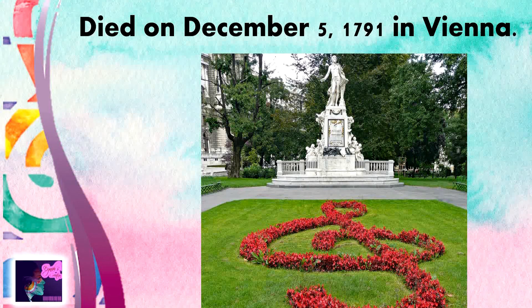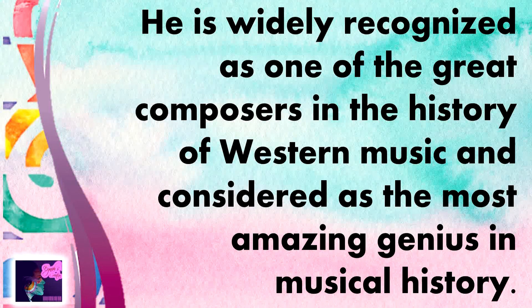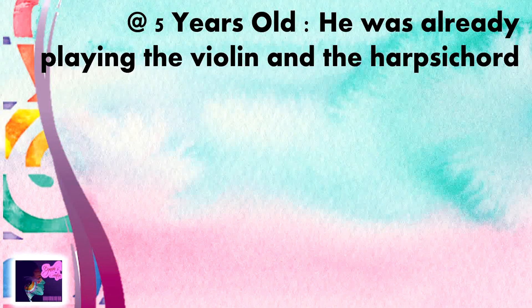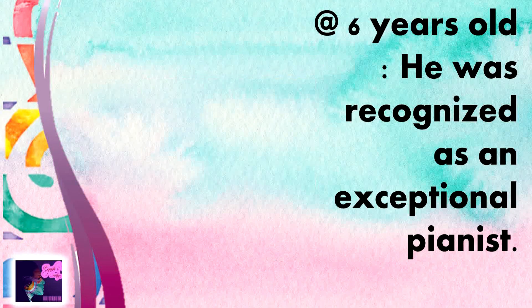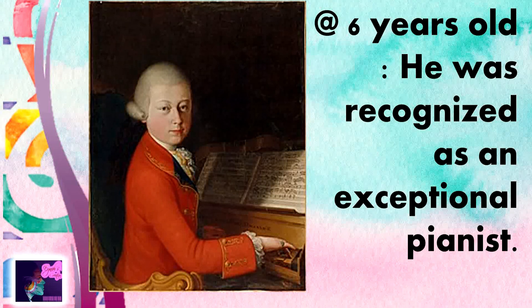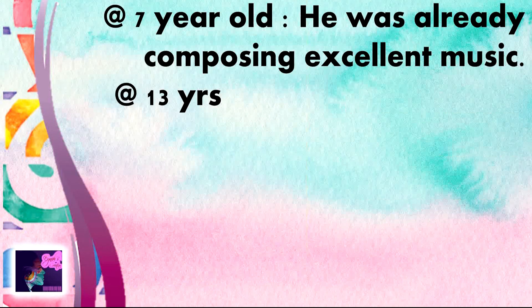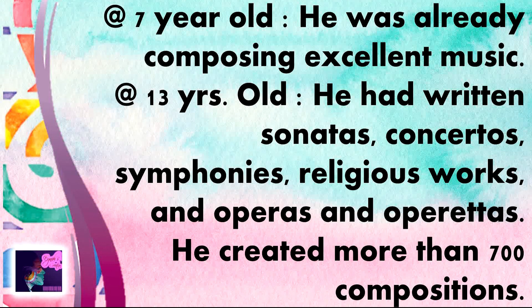He is widely recognized as one of the great composers in the history of Western music and considered the most amazing genius in the entire musical history. At the age of 5, he was already playing the violin and the harpsichord. By age 6, he was recognized as an exceptional pianist. And at 7 years old, he was already composing excellent music. After age 18, he had written sonatas, concertos, symphonies, religious works, and operas. He created more than 700 compositions in all.